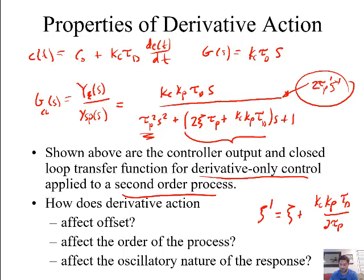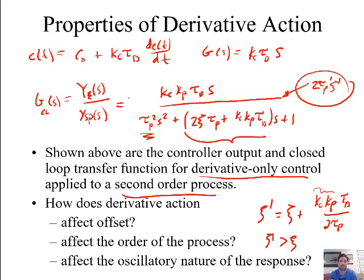In all cases, τP doesn't change, but because KC·KP must be positive, this term is always positive, meaning ζ' is always greater than ζ. In terms of process dynamics, this means less oscillation — the system moves more toward overdamped. So derivative action doesn't affect offset or response time, but decreases oscillations. The benefit is that we can increase the gain (making the process respond faster) while using the derivative term to keep oscillations under control.